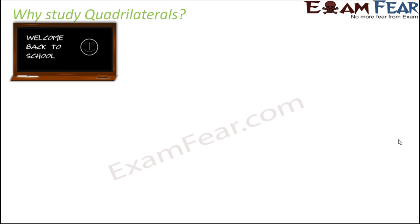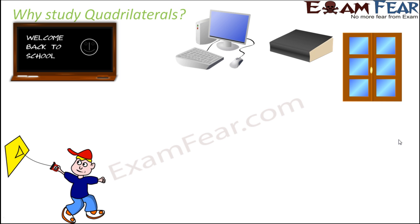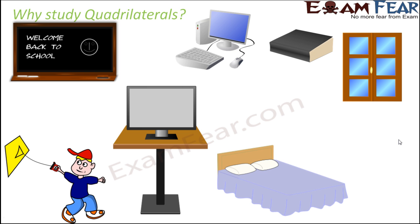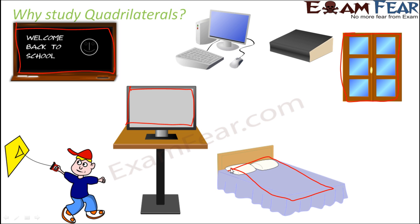Think of your blackboard — its shape is nothing but a quadrilateral. Think of the laptop screen or the desktop screen; the shape of the screen again is a quadrilateral. Think of a book, a window pane, or even a kite — all are in the shape of quadrilaterals. A table, TV, the bed — when you look at their shapes, the TV screen, the window pane, the blackboard, and the bed are all quadrilaterals.